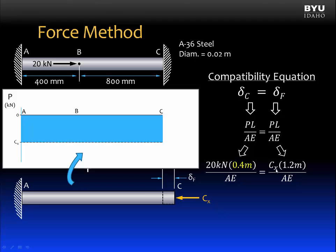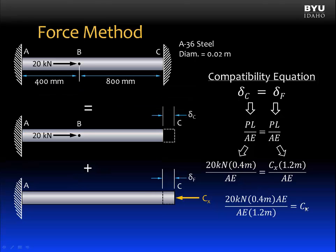The force P is equal to Cx, and the length is the length over which that force is acting. It's the whole length of the structure, 1200 millimeters or 1.2 meters. Notice, I didn't put a negative Cx in this equation even though it's feeling compression. That's because we are just comparing magnitudes of deflection here. So the sign doesn't really matter. Now we can solve this equation for Cx, and we see that the AE on top and bottom cancel out. So Cx is equal to 6.67 kilonewtons.